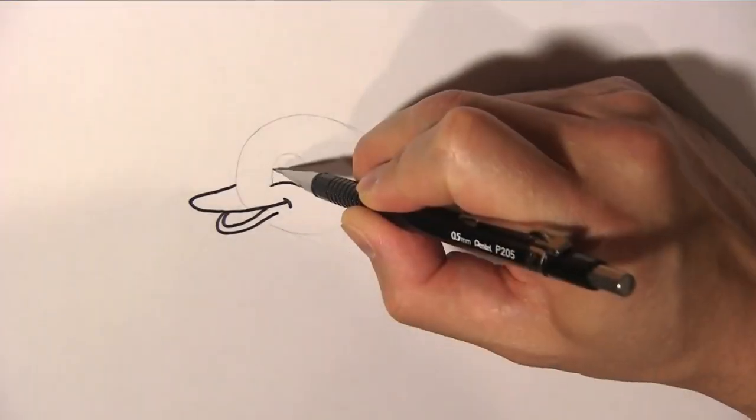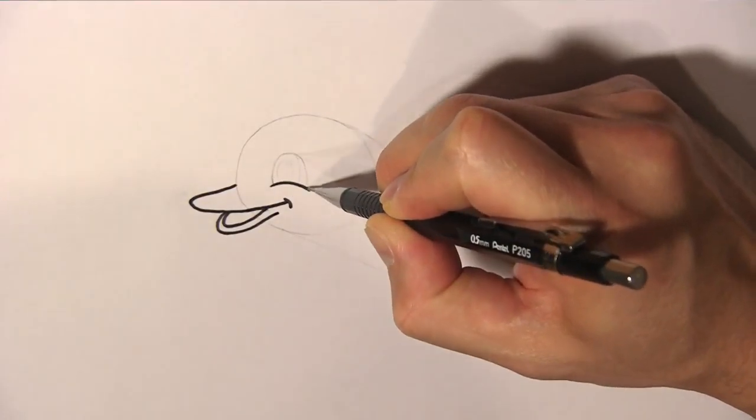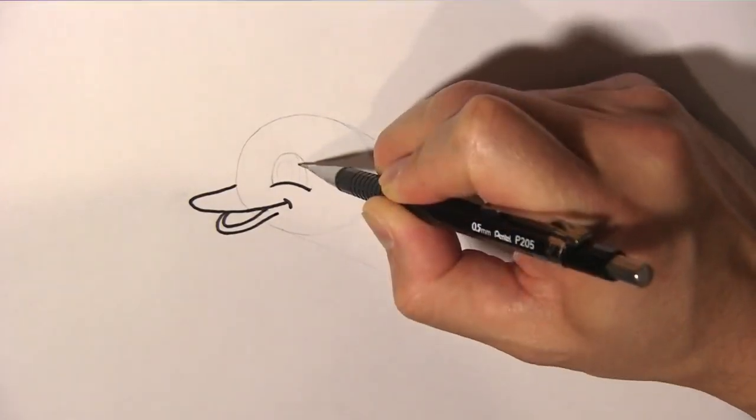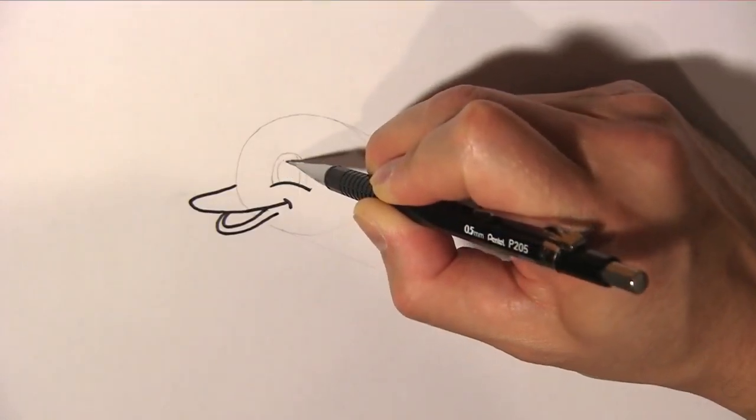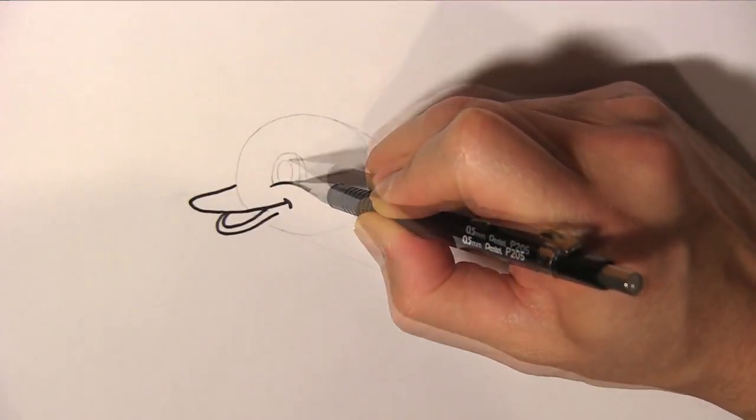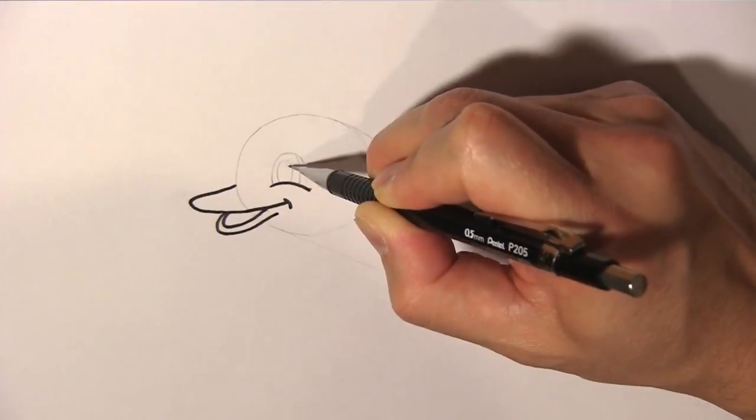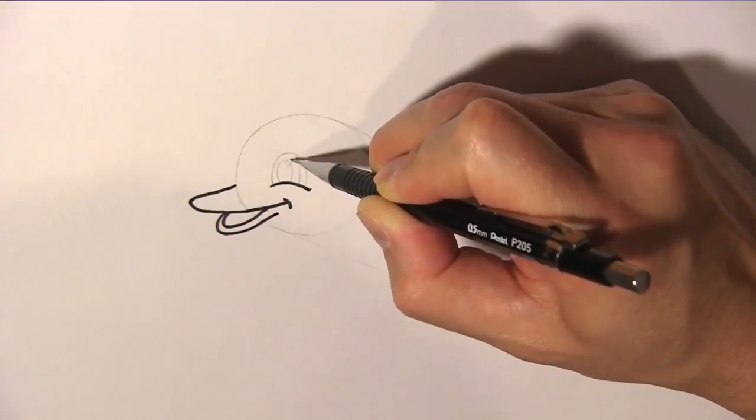And draw an oval for the eye. Draw a curved line inside for the iris. And draw a small oval for the pupil. And we draw a smaller oval to show the highlight in the dolphin's eye.